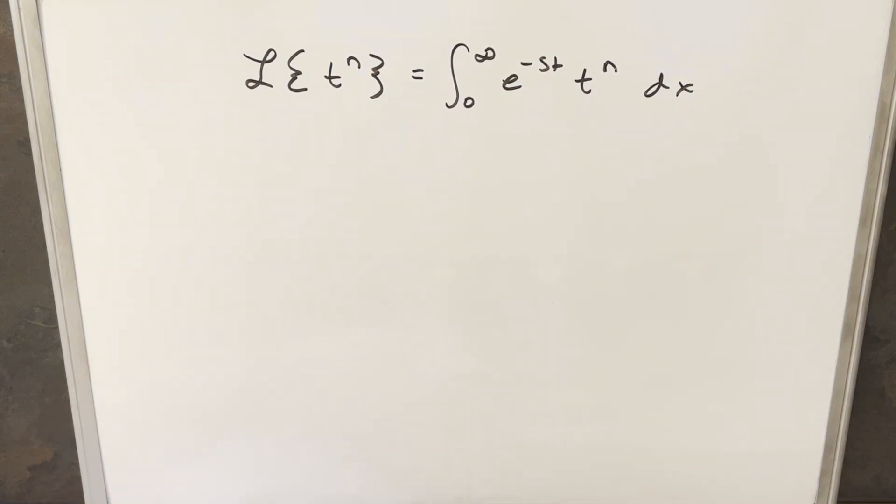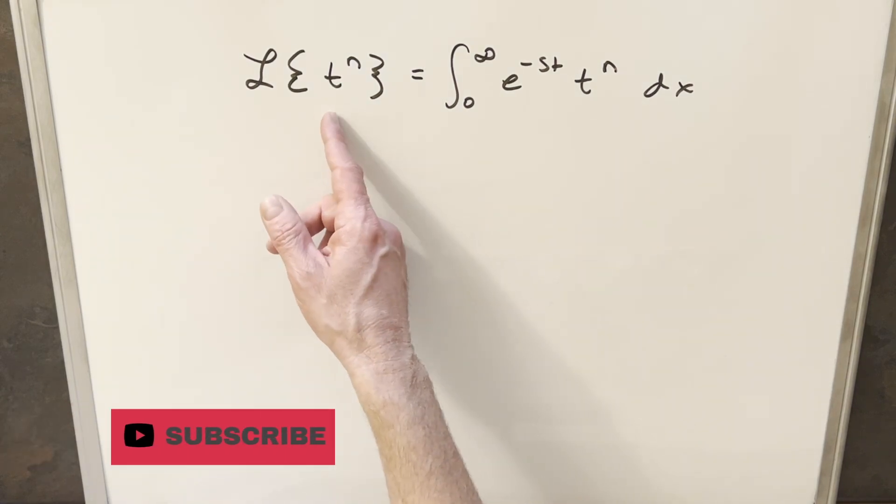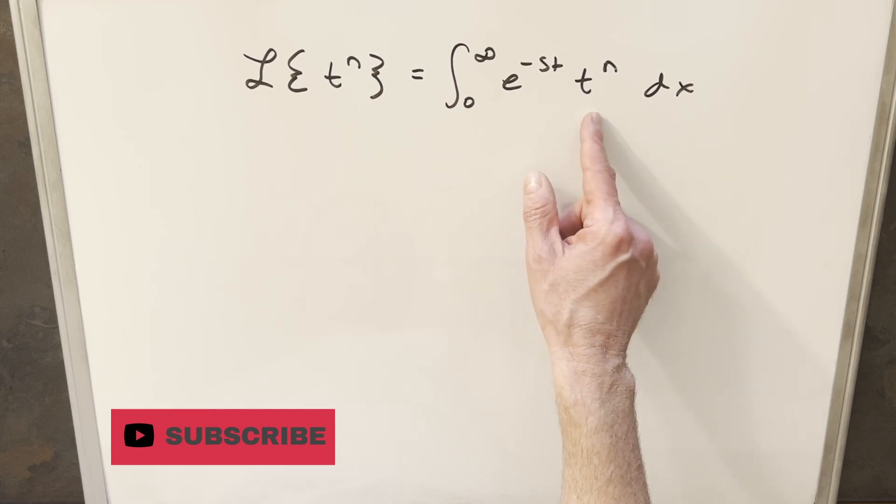So what we're going to do for this is use the definition of the Laplace transform, which I have over here to the right, where our function, our f of t, is going to be just t to the n, which I brought over here.